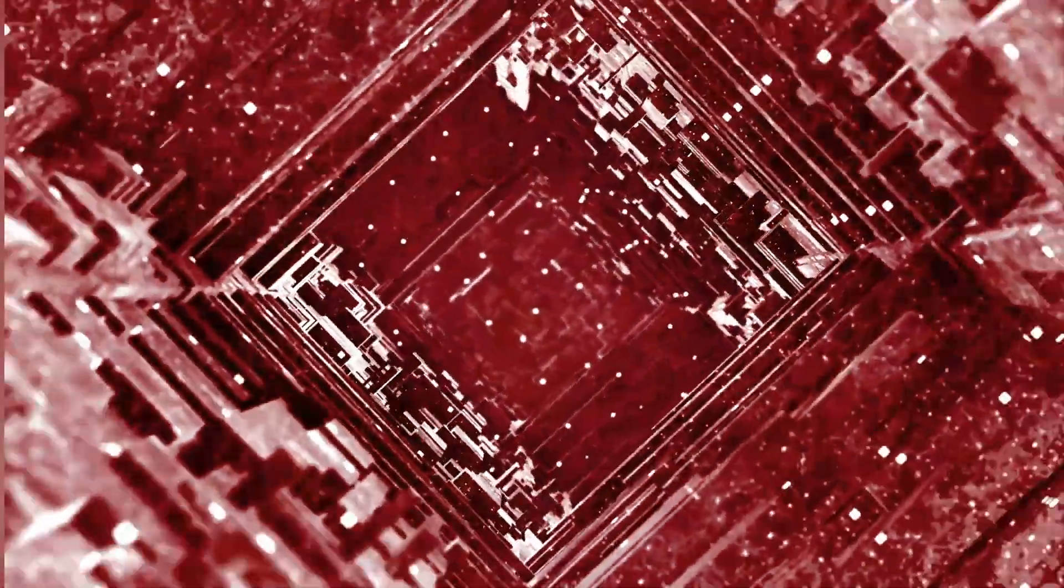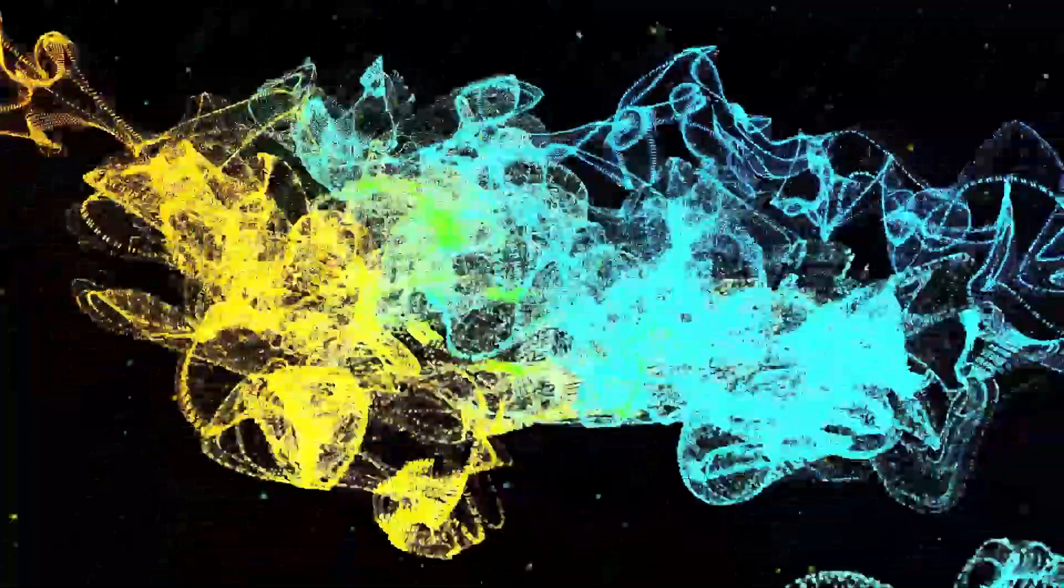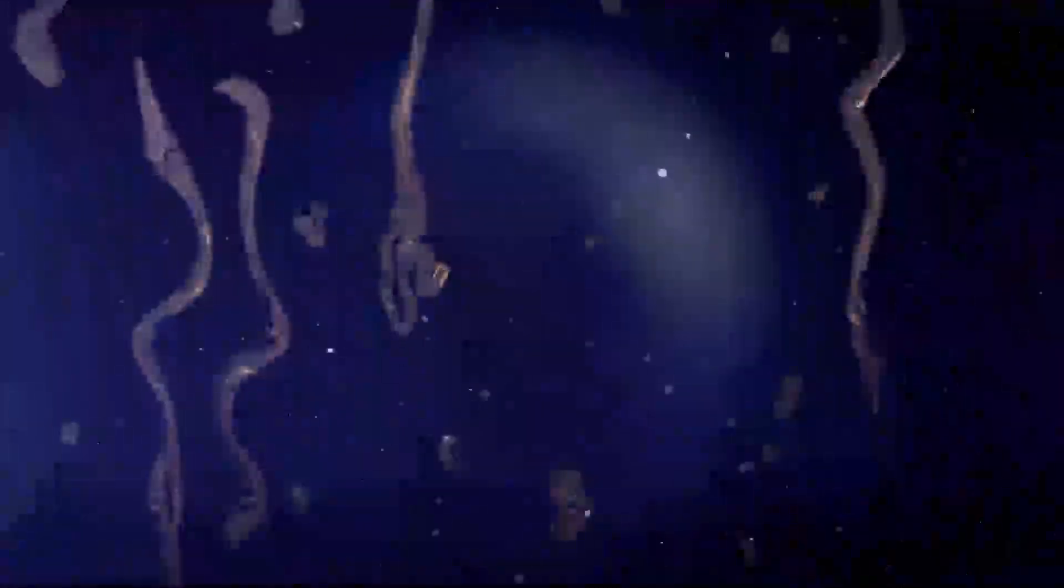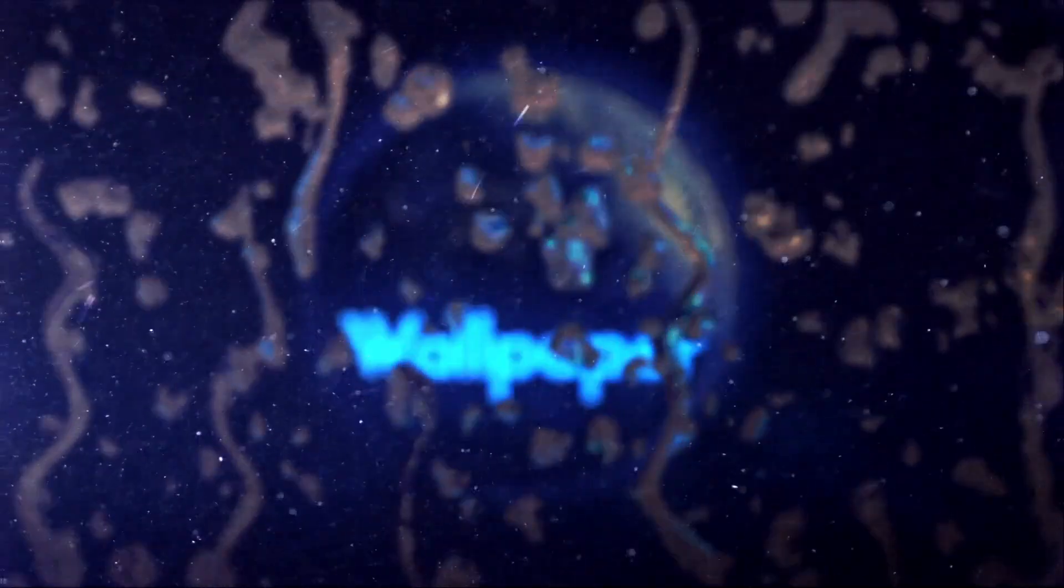An aerospace engineer analyzing the event described it as engineered. What we observed matches procedures for spacecraft separation, the kind of controlled division where one vehicle splits into two independent craft. There were preparatory energy pulses, structural releases, and then a clean separation along what appears to be a designed seam. This was built to split.